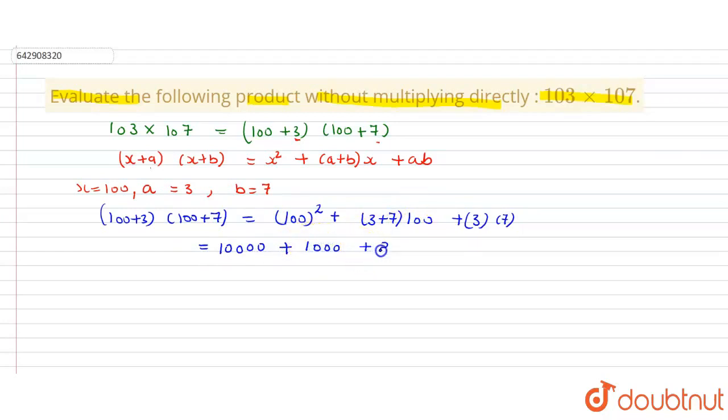Plus 7 times 3 is 21. Now we add our values, and the answer is 11,021. That is our final answer. Thank you.